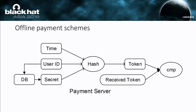The server will first check if the token is indeed generated by the claimed user, by retrieving the secret key from the database using the user ID associated with the token, and then using the same hash algorithm to generate a token, and comparing the generated token with the received token. If they are exactly the same, the token is confirmed as coming from an authenticated user.